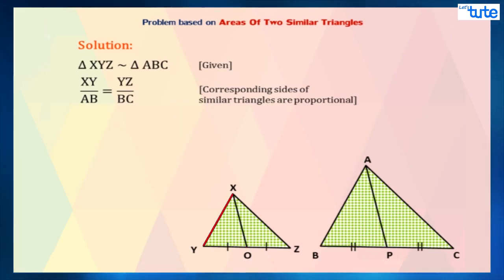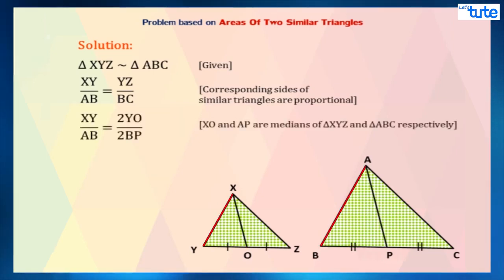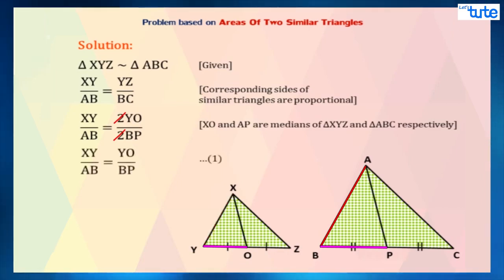Therefore, XY upon AB equals 2YO upon 2BP. By cancelling out 2 from both the numerator as well as the denominator, we get XY upon AB equals YO upon BP. Consider this as equation 1.